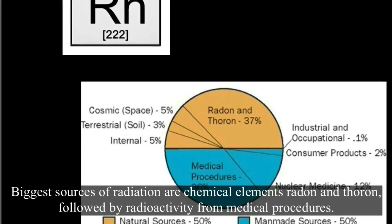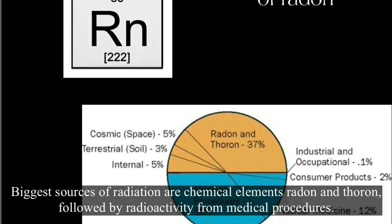The biggest sources of radiation are chemical elements radon and thoron, followed by radioactivity from medical procedures.